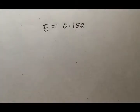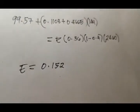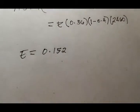So we will have E equal to 0.152, meaning 0.152 fraction of water evaporated from the original water in the feed.